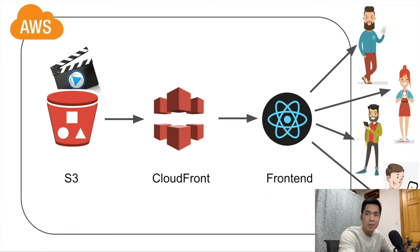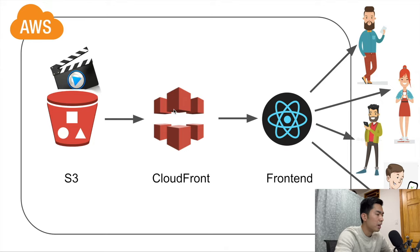Welcome back to another episode of AWS tutorial. Today I'm going to show you how to build a video streaming service that you can use to serve your content to people around the world. The architecture we're going to build is very simple — we're going to use an S3 bucket to host our videos and then use CloudFront as our content delivery network to distribute our video content.